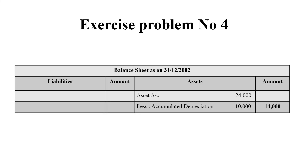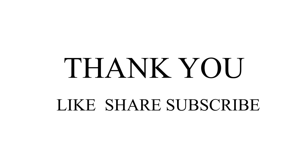In the case where provision for depreciation is maintained, we calculate the asset account at its original cost value of Rs. 24,000, and separately calculate the accumulated depreciation to show the final value of Rs. 14,000 in the final column. If this video is useful for you, please like, share, and subscribe. Thank you very much.